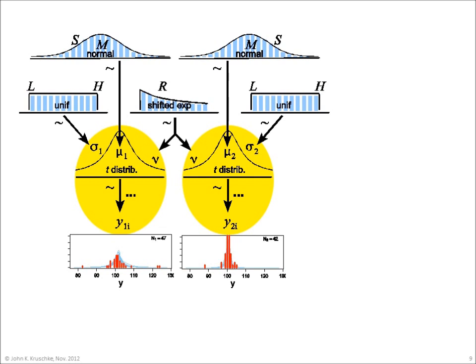This figure shows the data at the bottom in red histograms. The descriptive model is highlighted in yellow. Each group's data are described as coming from a t-distribution, as suggested by the arrows descending to the data. There are five parameters altogether, namely the means of the two groups, denoted mu1 and mu2, the standard deviations of the two groups, denoted sigma1 and sigma2, and the normality of the data, denoted nu.